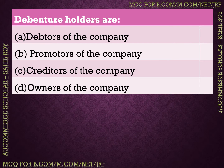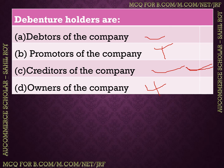The next question: Debenture holders are who? Options: debtors of the company, promoters of the company, creditors of the company, or owners of the company. Debenture holders are creditors — they are not owners. The correct answer is option C: creditors of the company.